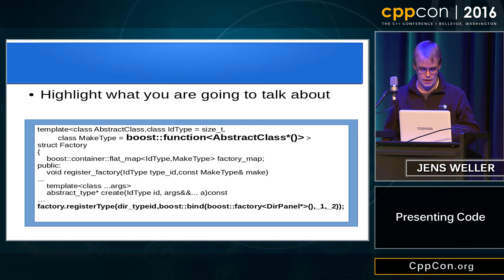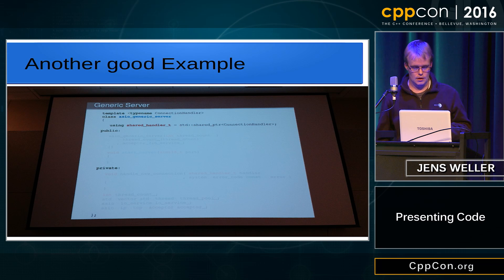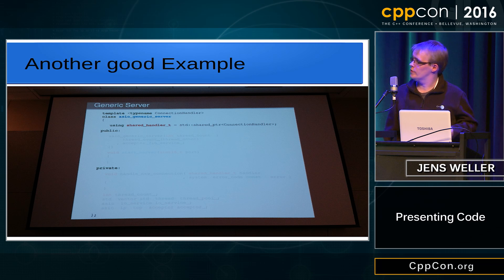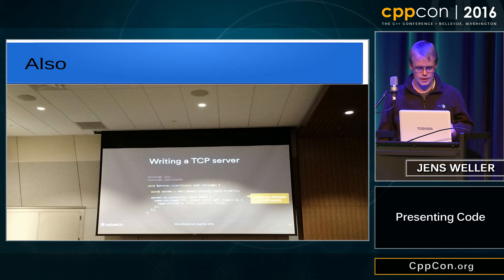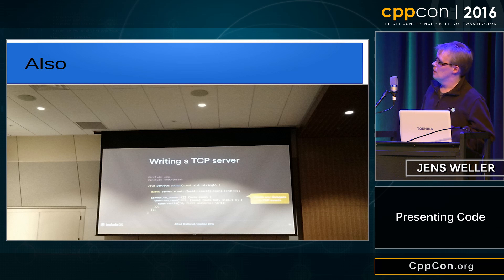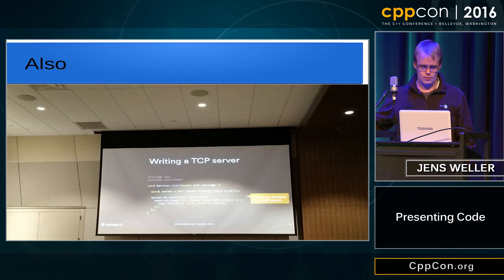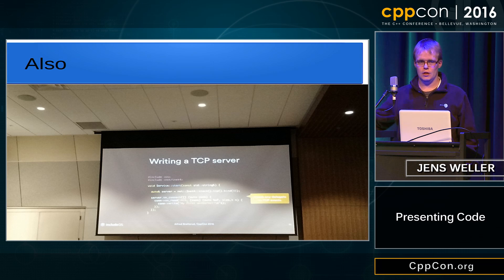Another very good example I saw today is from a talk with Michael Cass. He simply grays out the area where he's not currently talking about, and then slide by slide more and more code comes up — showing the code he has talked about or is currently talking about. You can also use the presentation program to have callouts which say this is the part I'm talking about and this is what I want to say. This helps enormously.